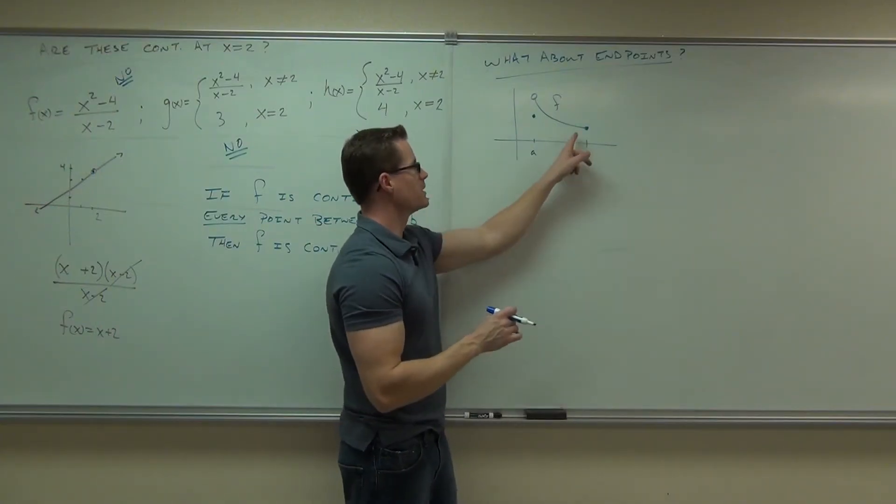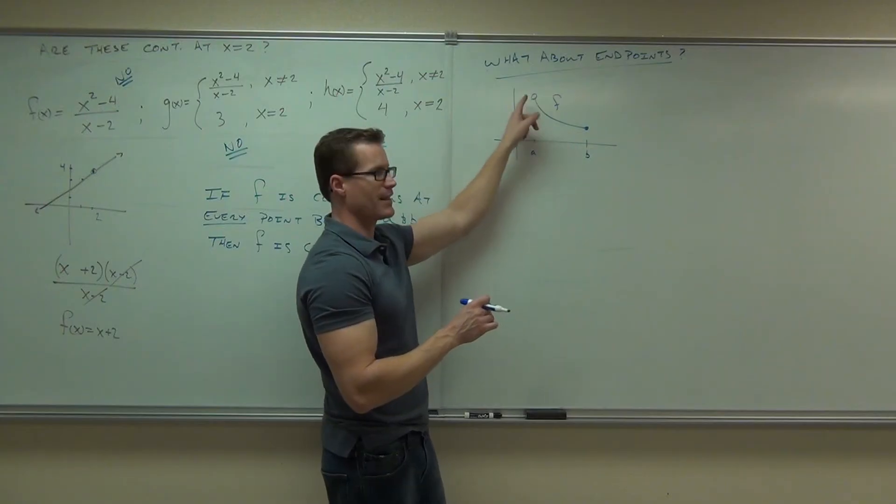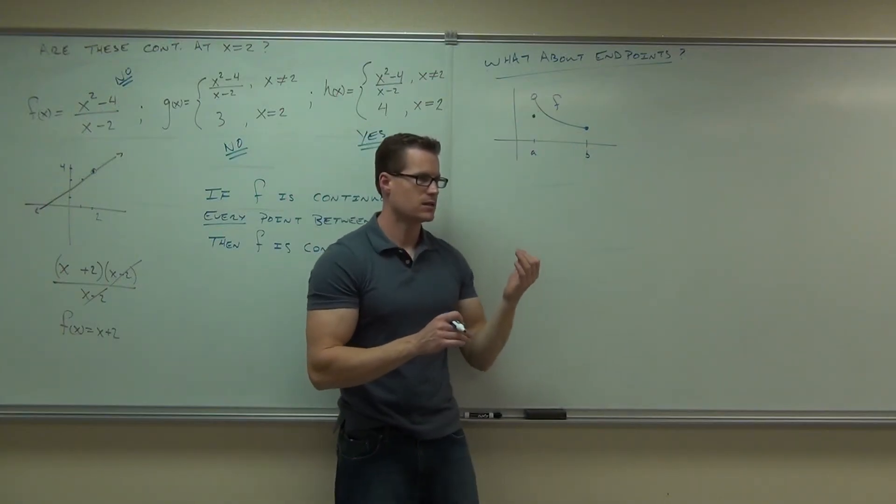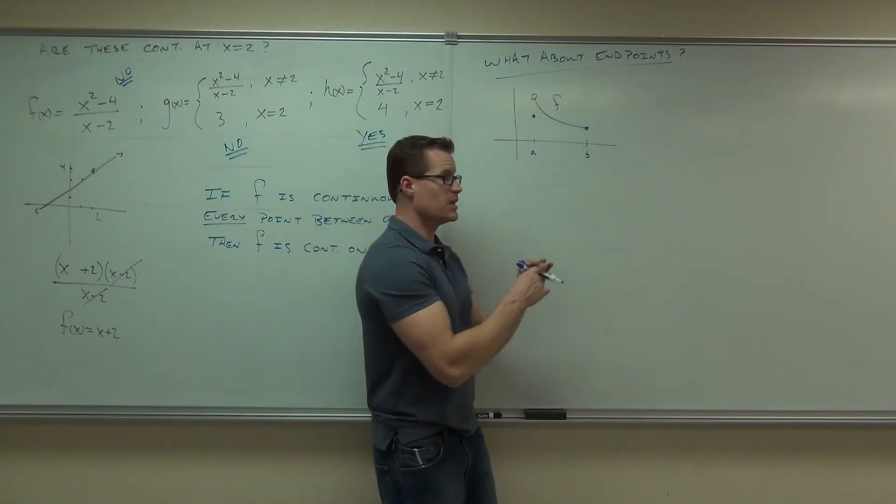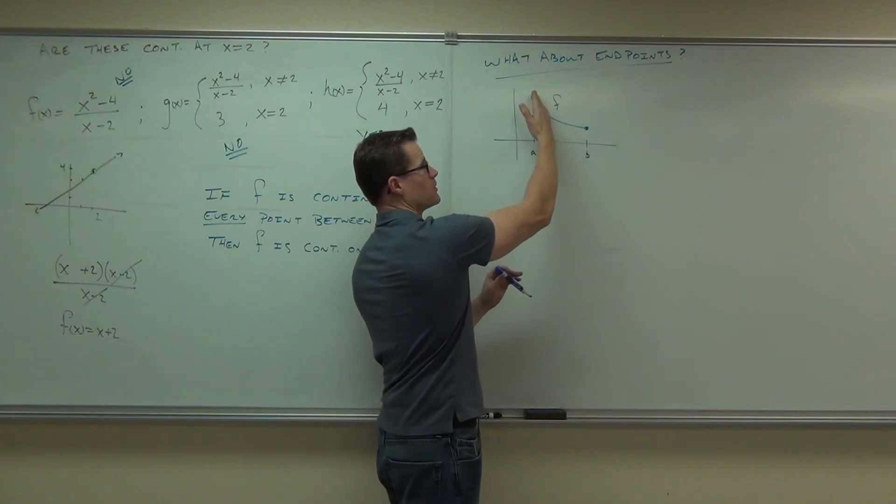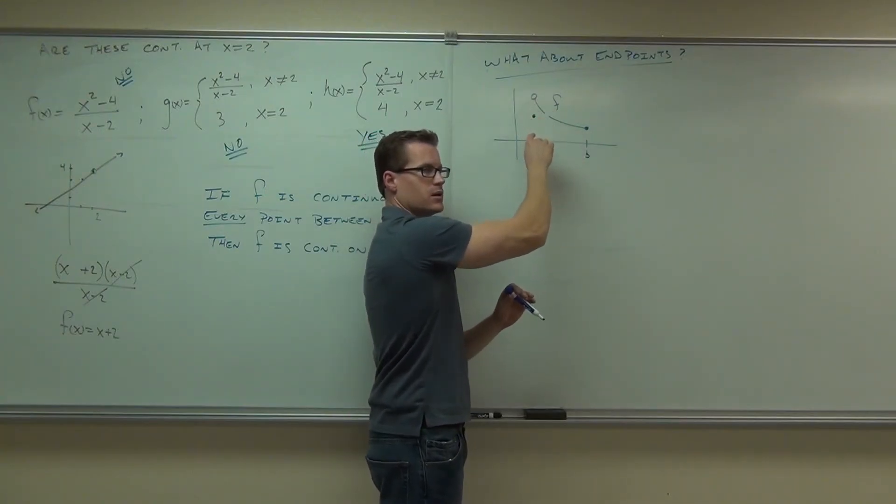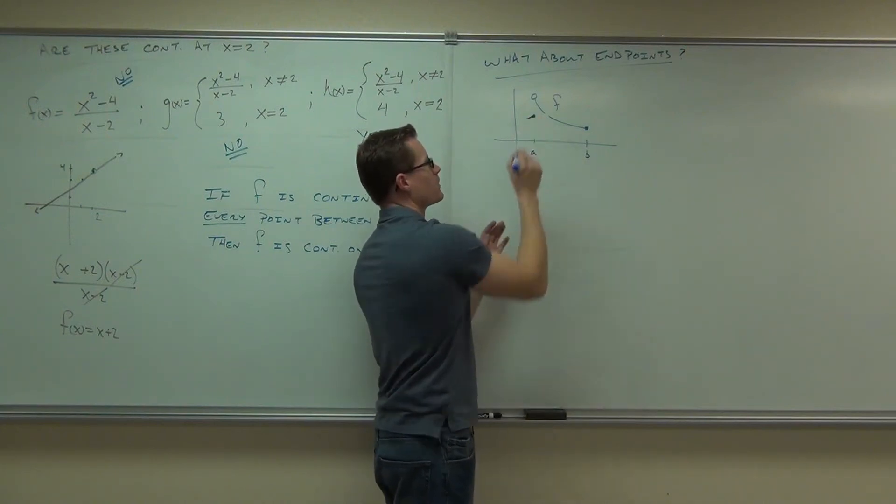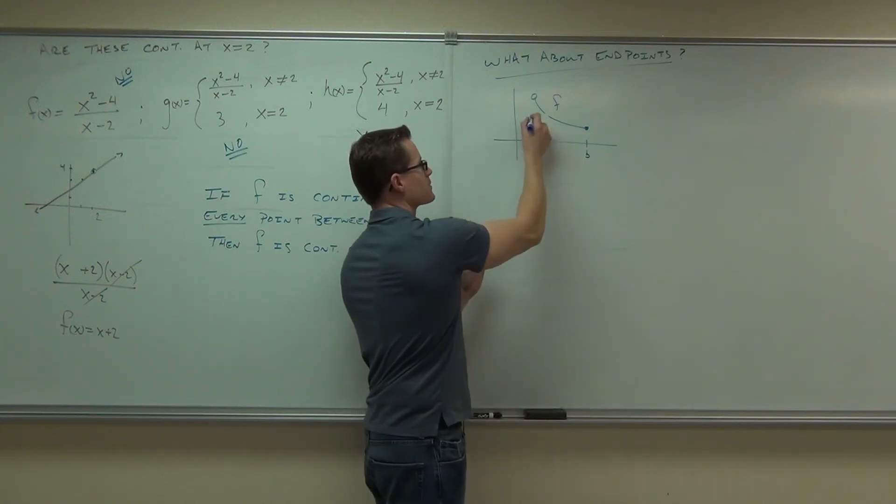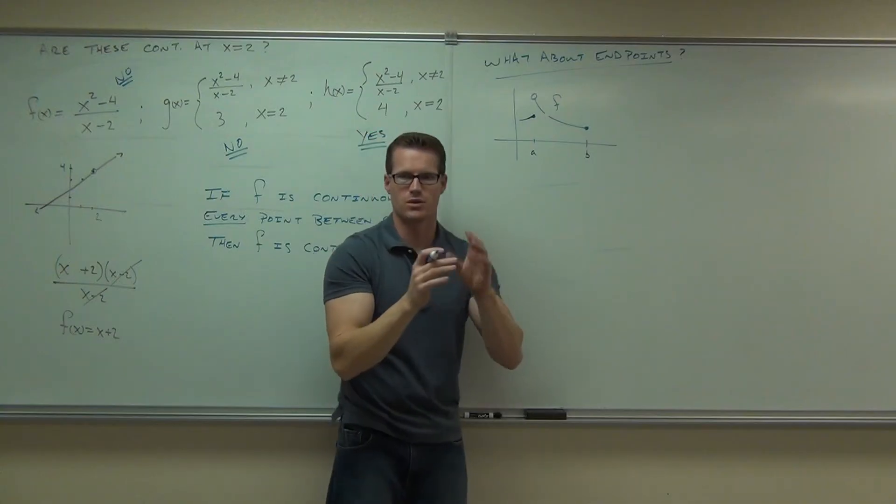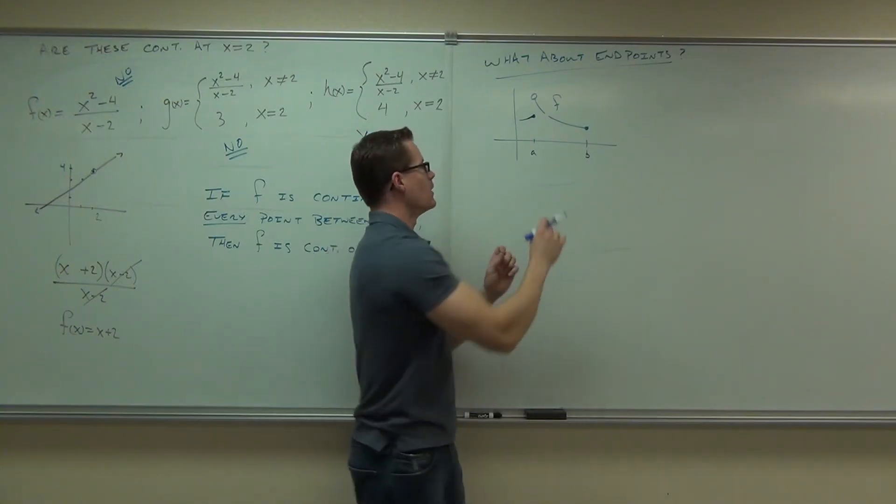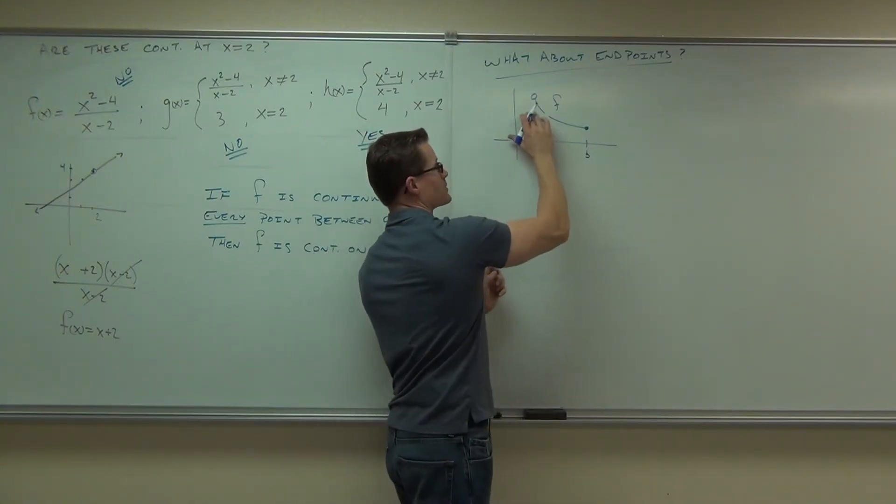How about the left-hand side? Does the limit, I'm sorry, is it continuous at the point a? At the point a. The limit exists from the right, sure. The point exists, but is the limit equal to the point? No. This would be kind of like a jump, right? If I had this going this way, that would be like a jump continuity. You have that point that's not there. Now, it doesn't have that other side.